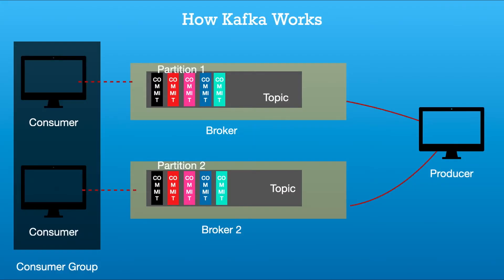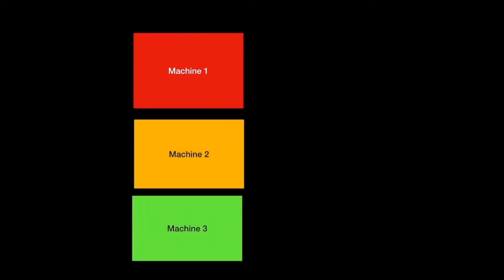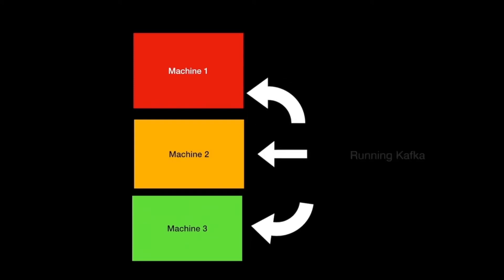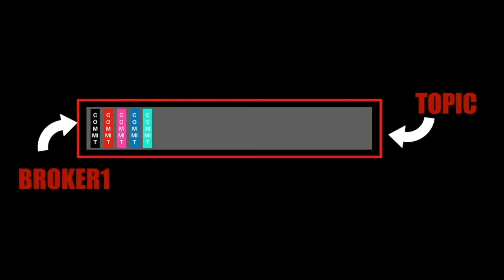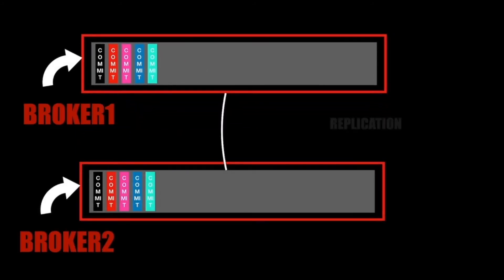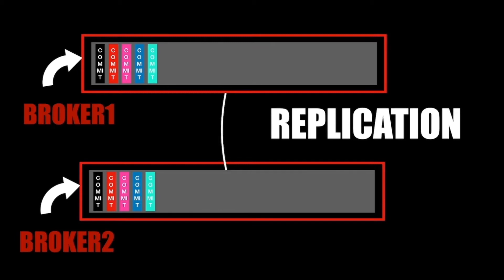We have discussed about the architecture of Kafka in our previous videos. If you haven't gone through those videos, I will add the link and highly recommend you to go through those first. As we know, Kafka runs across multiple machines known as brokers. Kafka is a commit log and messages are stored inside a topic as a commit log. We distribute these messages across multiple machines, and the mechanism of replicating those messages across multiple brokers is known as replication.